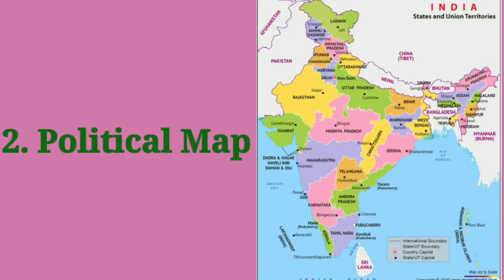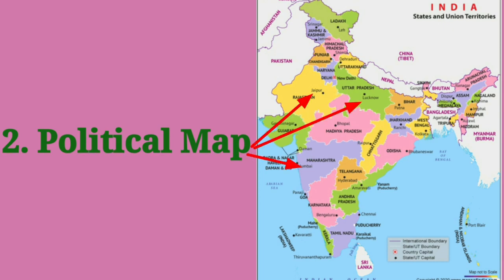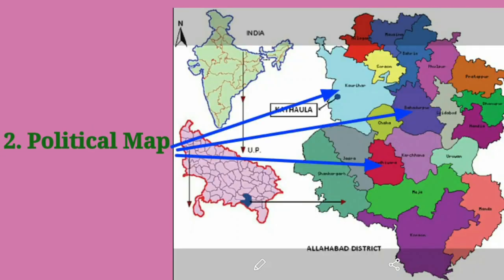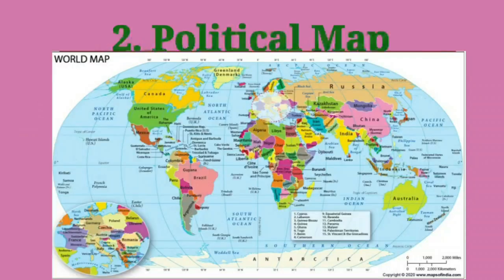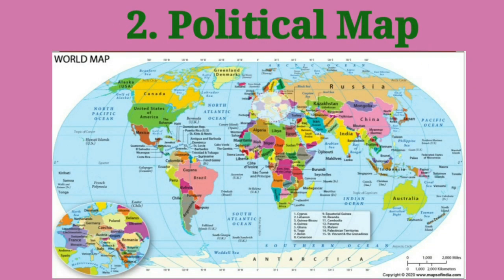Political maps show the states, cities, villages, and countries with their boundaries.